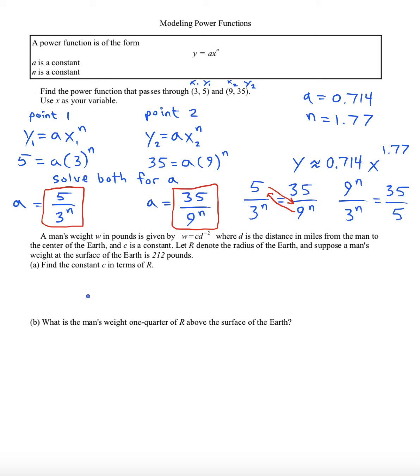Our original formula says weight equals cd to the negative 2. Now the distance is going to be the radius of earth and we also know the weight is 212, so let's plug those things in. If we just simply solve for c we'll have the answer to part a.